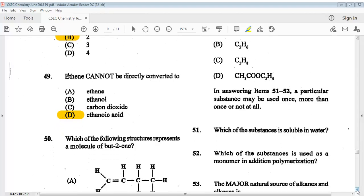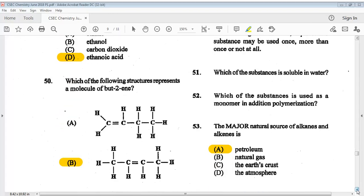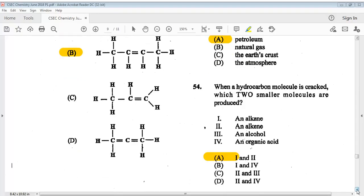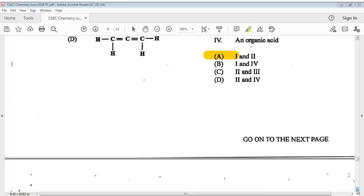Let's go on to fifty-three. The major natural source of alkanes and alkenes is A, petroleum. Question fifty-four: when a hydrocarbon molecule is cracked, which two smaller molecules are produced? 1, an alkane. 2, an alkene. 3, an alcohol. 4, an organic acid. The answer is A, 1 and 2.